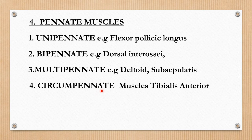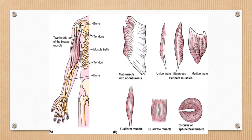Circumpinnate muscles are those where along the central tendon the attachment of muscle fibers radiates from all sides. The unipinnate has fibers on only one side of the central tendon, resembling half a feather — example: flexor pollicis longus. The bipinnate has fibers arranged bilaterally on each side of the central tendon — example: dorsal interossei. When multiple units group together into a muscle mass, that is the multipinnate muscle — examples: subscapularis and deltoid.